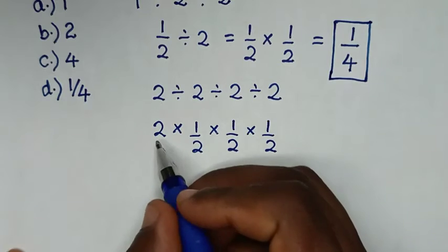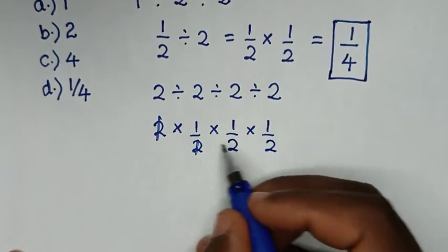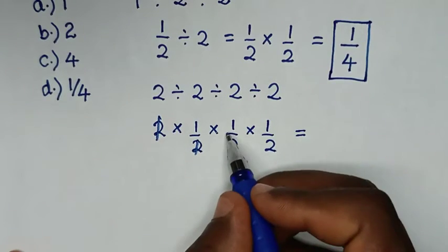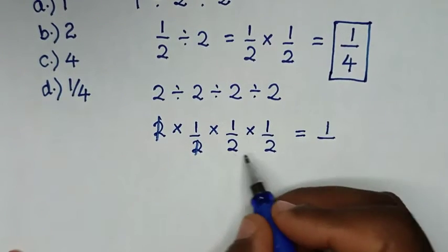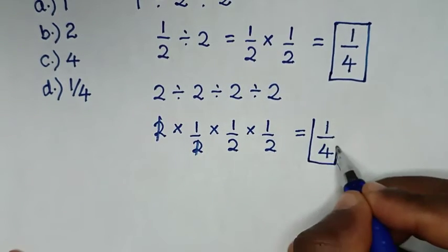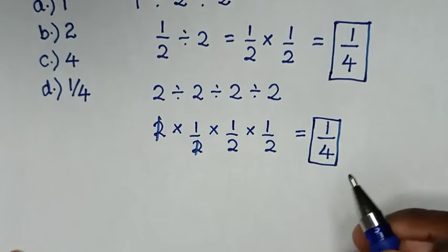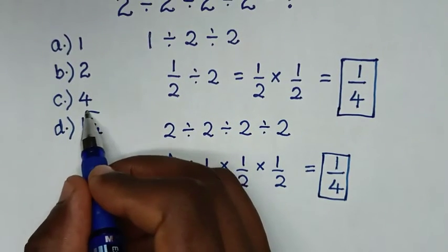To simplify, the 2 will cancel. So it equals 1 × 1/2 × 1/2. 2 times 2 is 4, so the answer is 1/4. This is the same answer as the first method. Selecting the multiple choice, it is D.